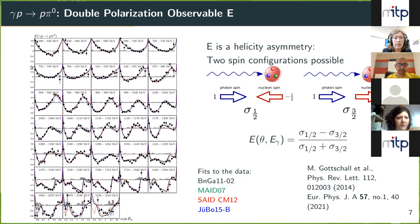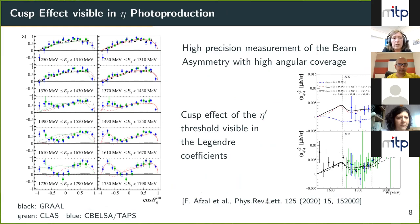At lower masses the data shows a quite simple structure, and the data points are well fitted by predictions from different partial wave analyses. But at higher masses the data fluctuates more and different partial wave analyses had trouble describing it — a larger data set there would be helpful. Both data sets shown here have been published in recent years.